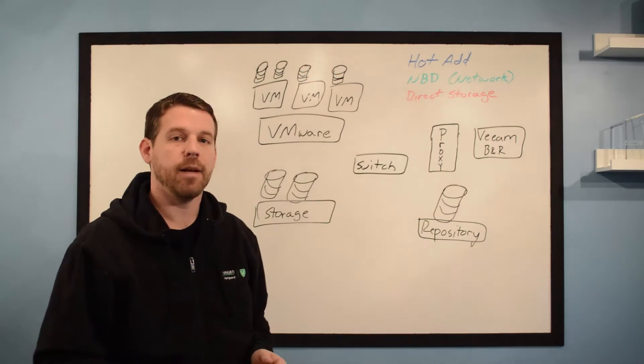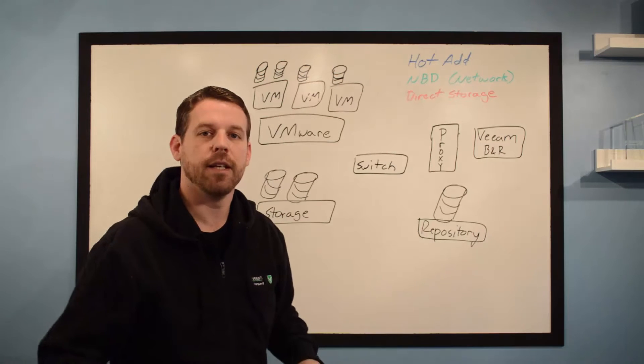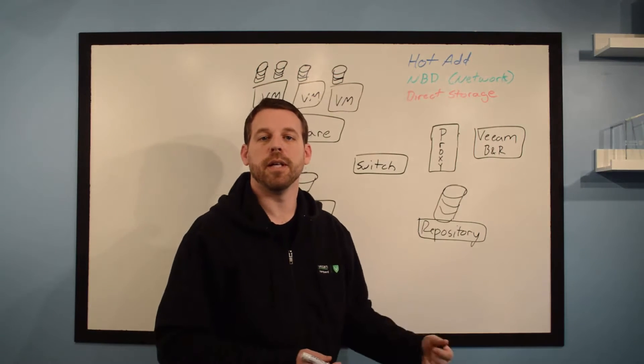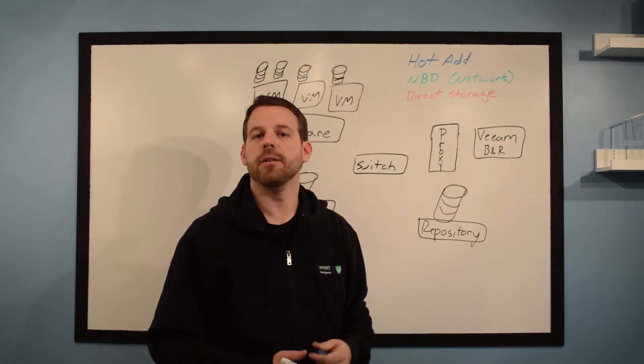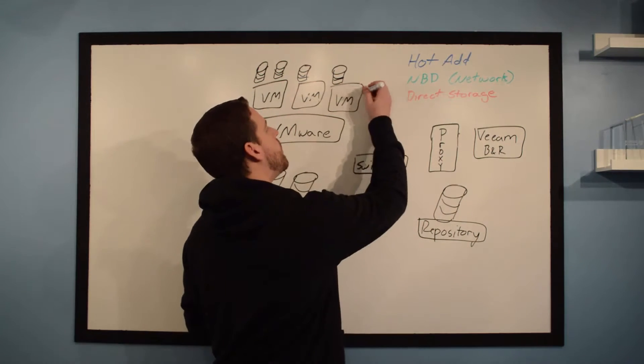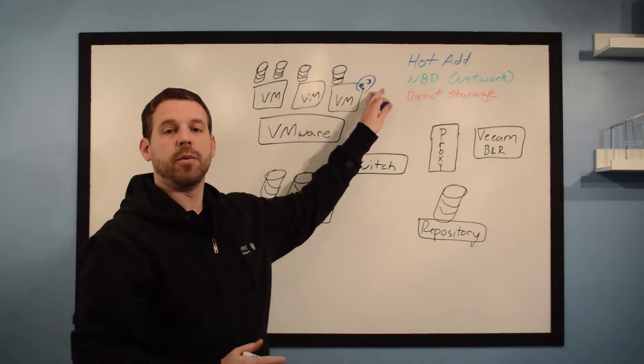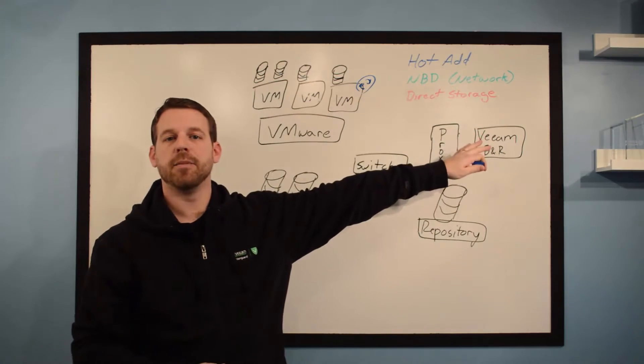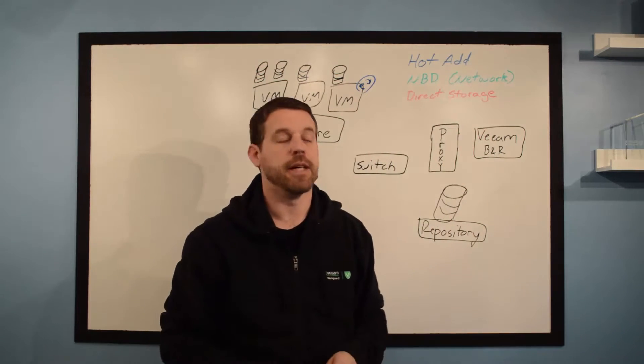The first one is hot add mode. Now hot add mode requires us to deploy a proxy onto a virtual machine. Usually what you're going to do is deploy a couple Windows 2012 or 2016 virtual machines and use these as dedicated proxies. We'll use this one here. So we've managed, we've added this virtual machine into our management here in Veeam, we've deployed the proxy service, and it is now available to us.